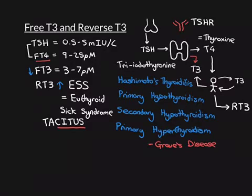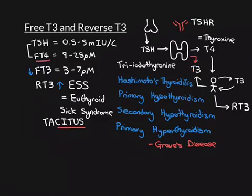You might think: if T3 goes down, surely the pituitary gland is going to end up releasing more TSH — because remember, the pituitary gland measures the T4 and T3 level. If T3 is going down, then surely the pituitary gland is going to acknowledge that and increase its secretion of TSH, and therefore T4 is going to go up. So you might think TSH and T4 are both going to go up — but that is not what happens.